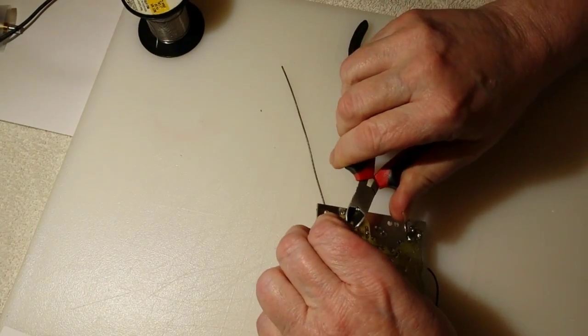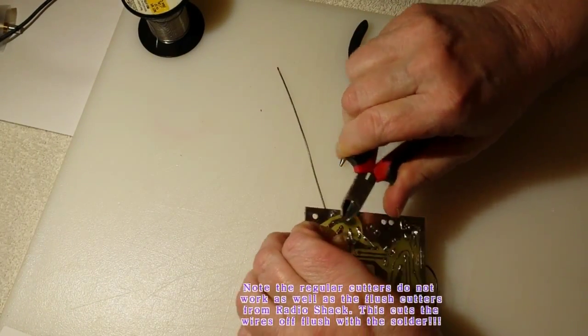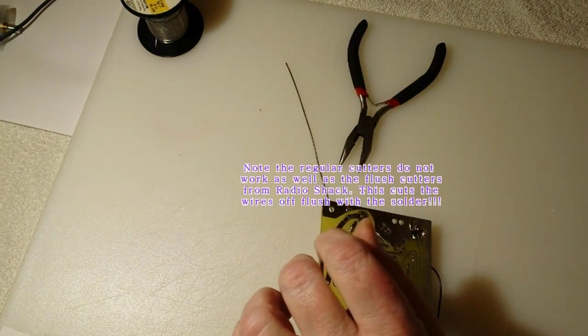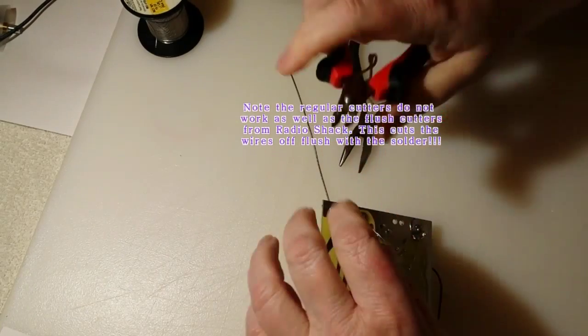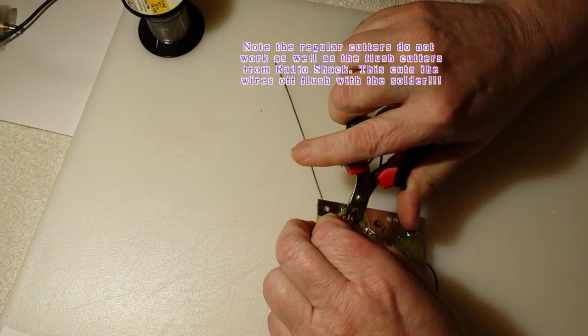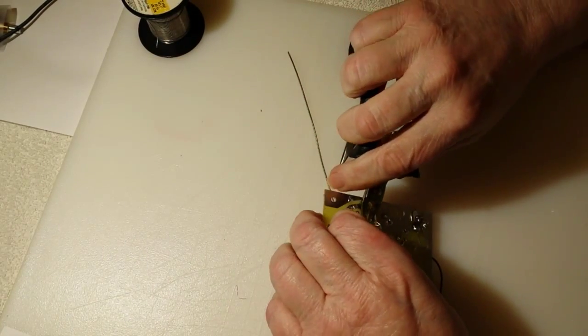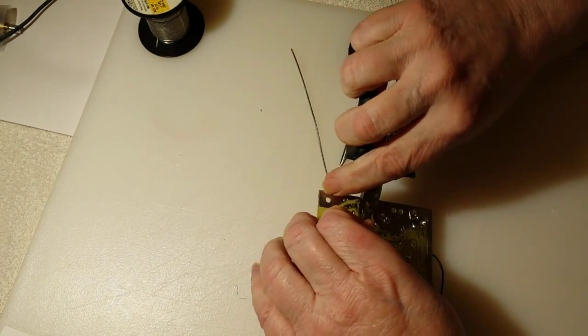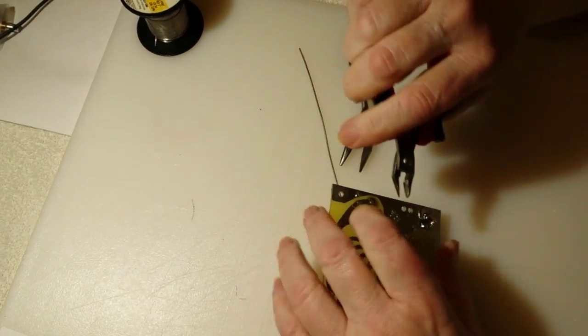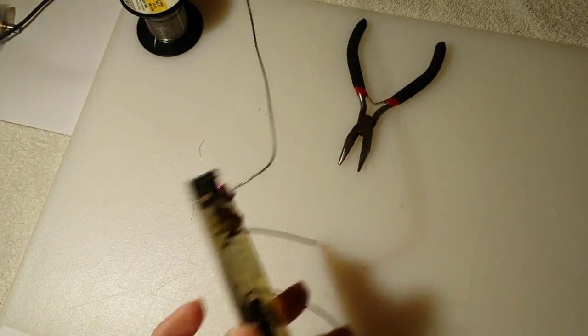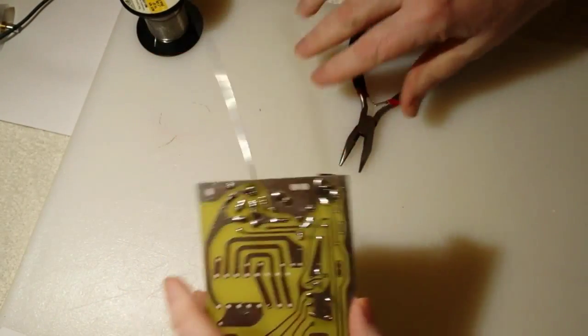Now here I try to use a pair of just regular nippers and you notice right away I go back to the flush cutters so that I get a nice clean job. Then you want to brush away any leavings so that your work is not laying there in just little pieces of wire that could stick to the board.